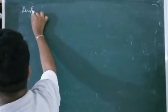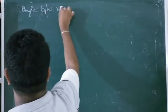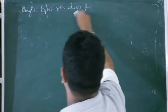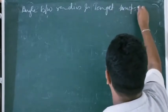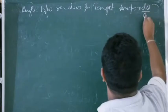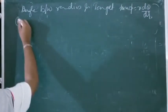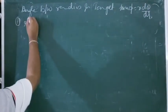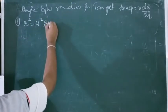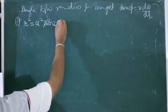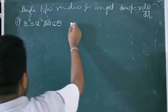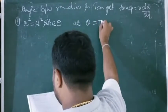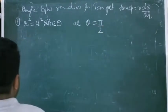Let's start with the question of angle between radius vector and tangent. The concept we have to use is tan φ = r·dθ/dr. Let's solve the first question: r² = a²·sin(2θ). We need to find the angle between the radius and tangent vector of this curve at θ = π/2.